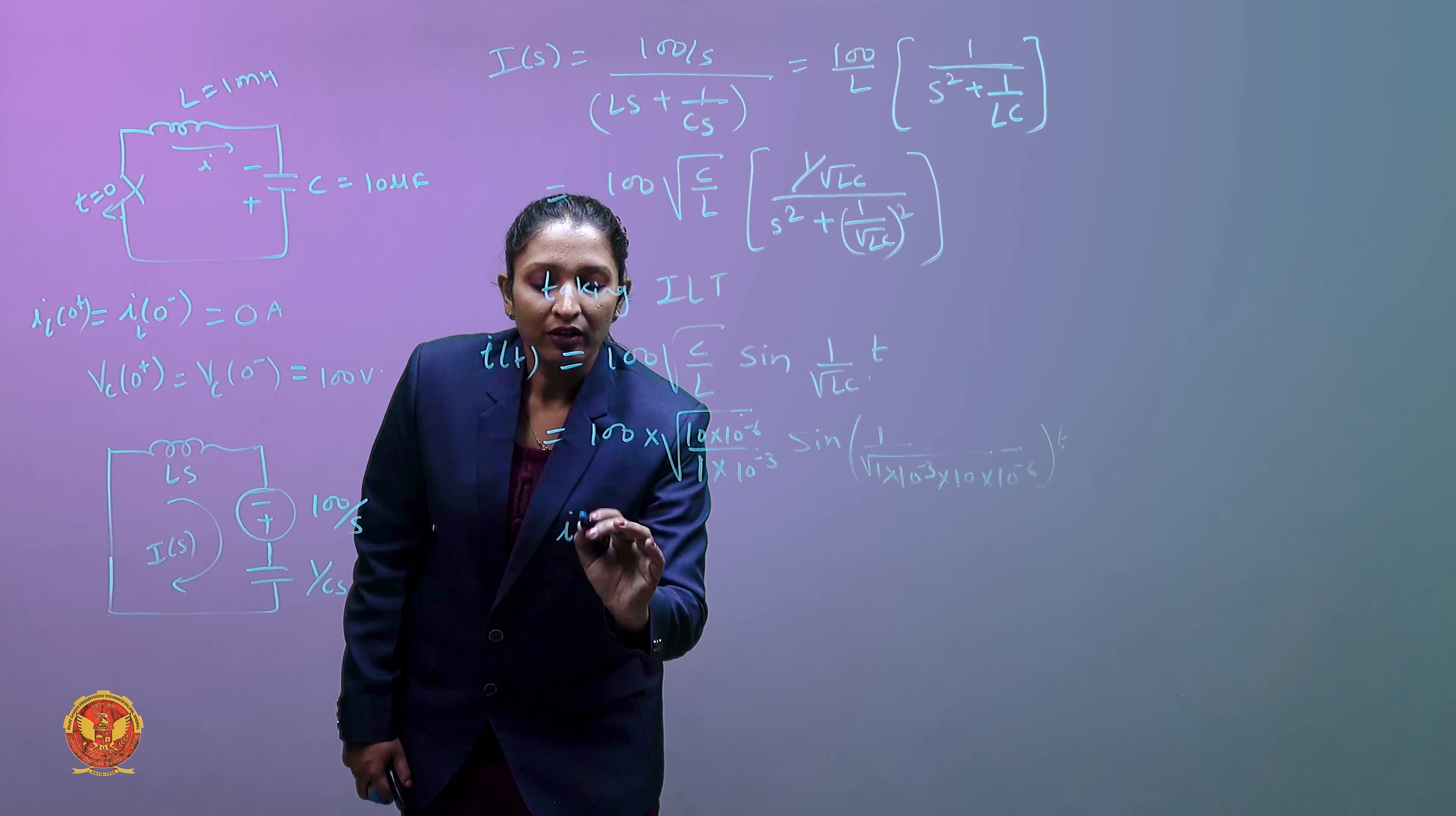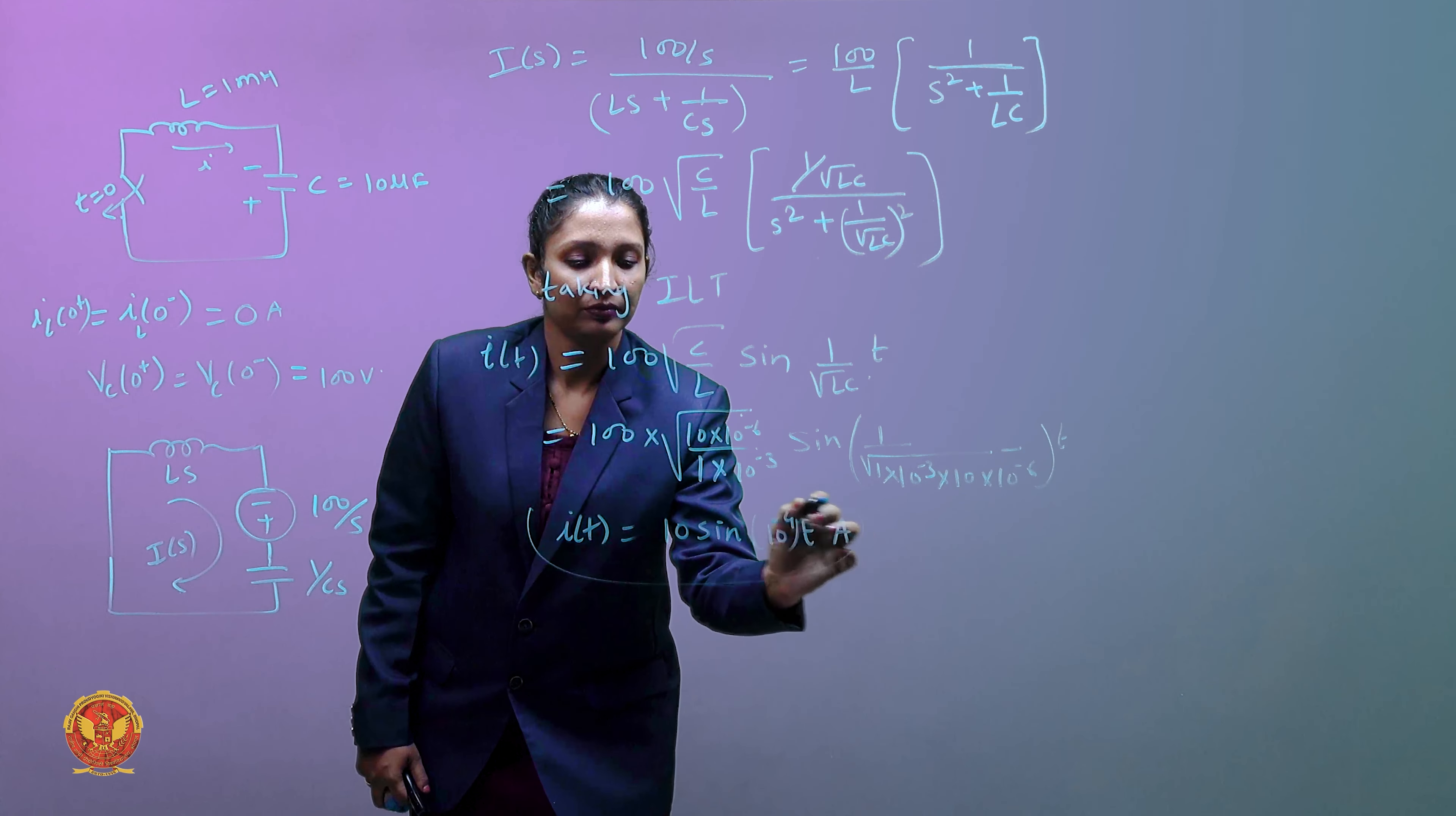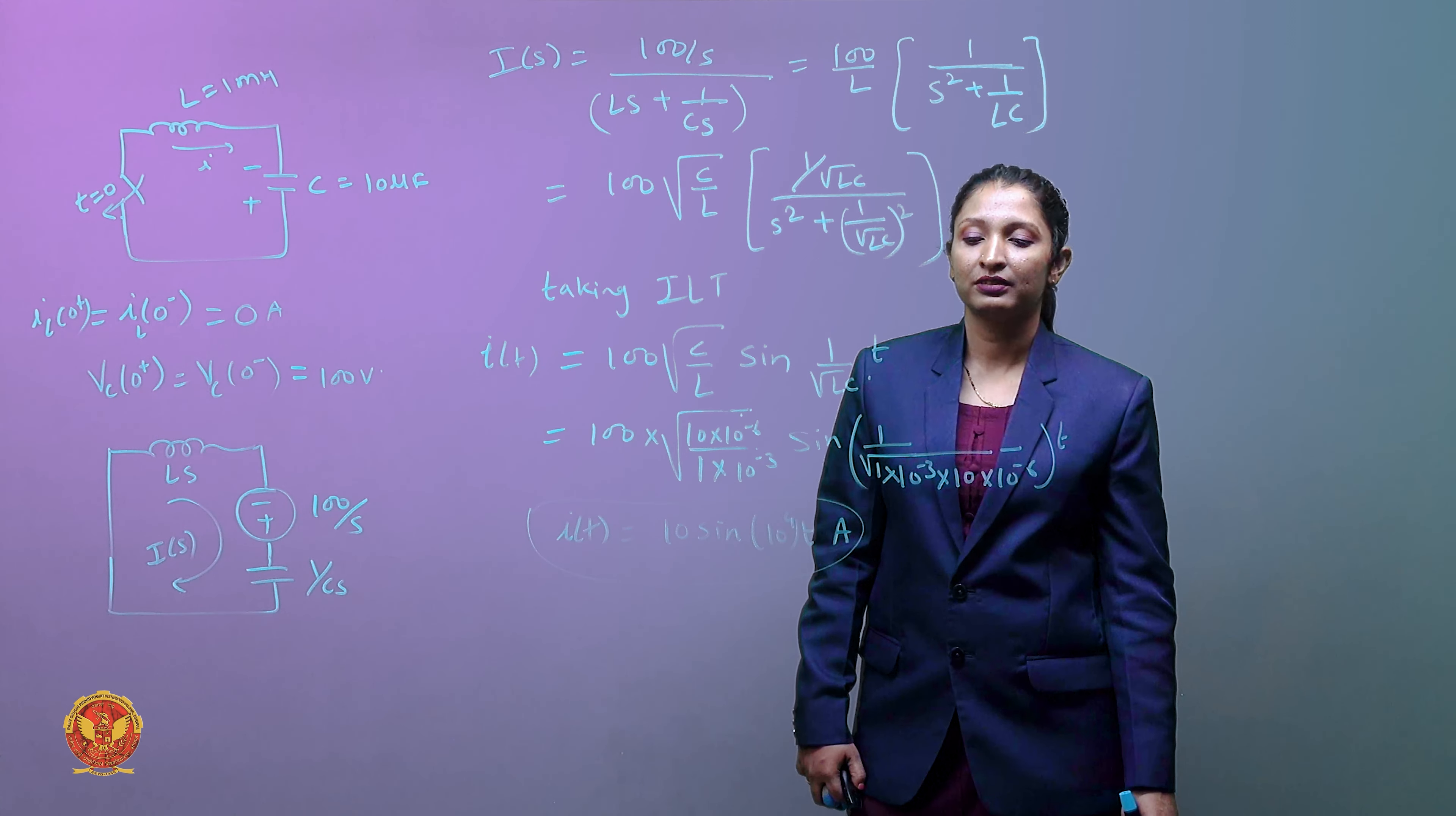This is equal to I of t is equal to 10 sine 10 to the power 4 t. This is equal to ampere. This is your current which you have asked, so your option number d is correct. Option number d, that is your correct answer. Thank you.